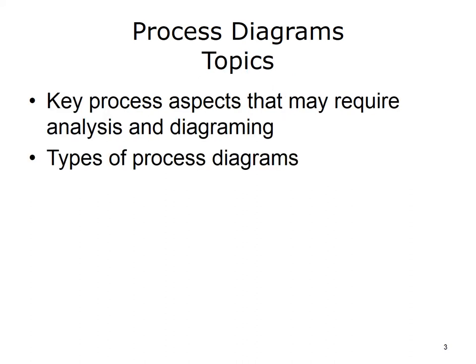The topics covered in this lecture include key process aspects that may require analysis and diagramming, and types of process diagrams. In Lecture A, these topics are combined into a framework that organizes process diagram types according to the process aspects that each type of diagram represents. Thus, Lecture A serves as an introduction to the Unit 3 material.